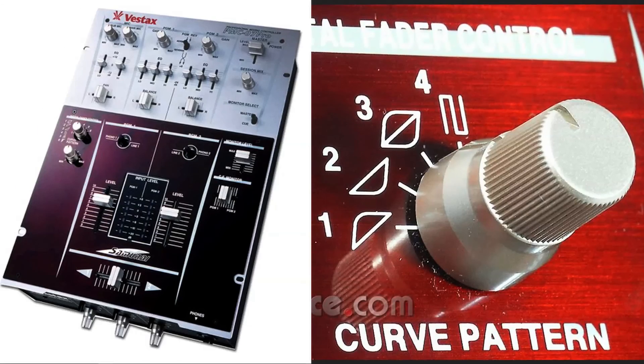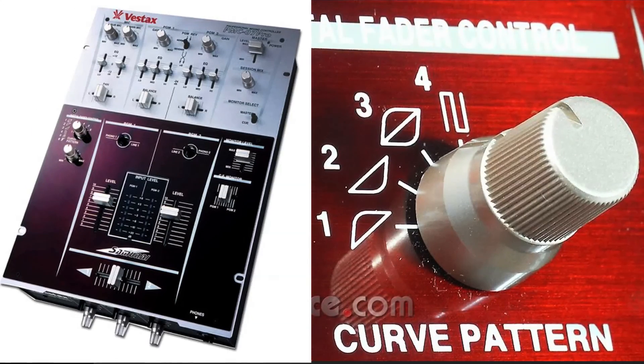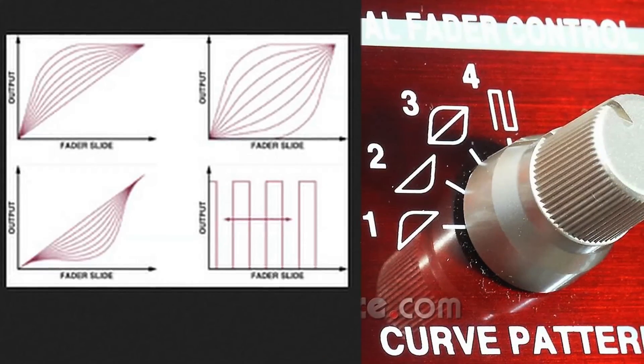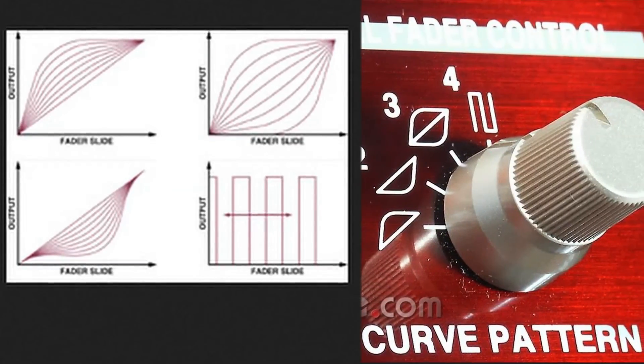The rare line of samurai mixers by Vestax incorporated a tremolo automatic clicks function that many DJs at the time felt was cheating, since scratches like crabs and orbits could be done with just one cross fader hand motion.